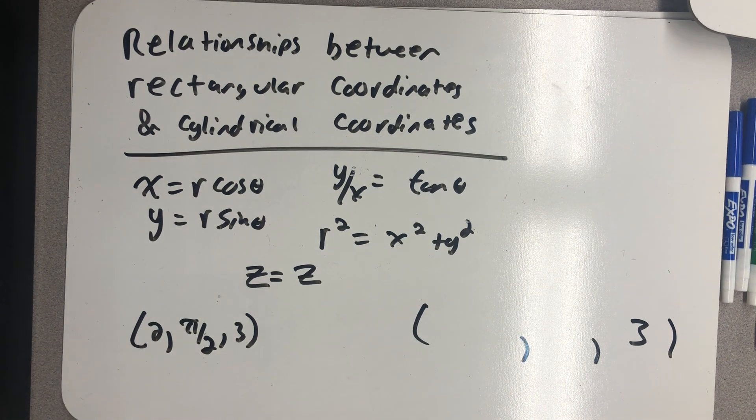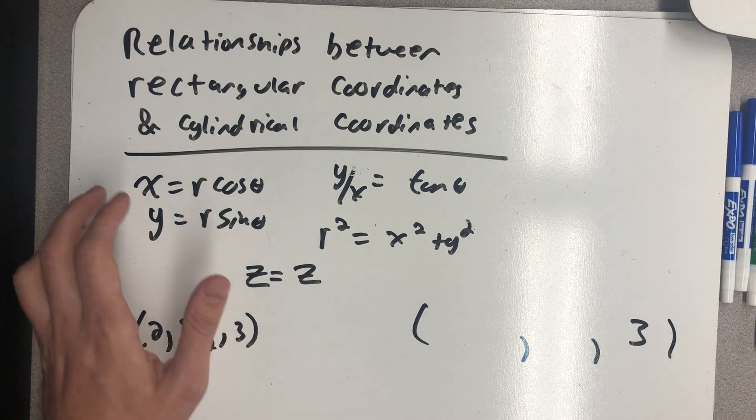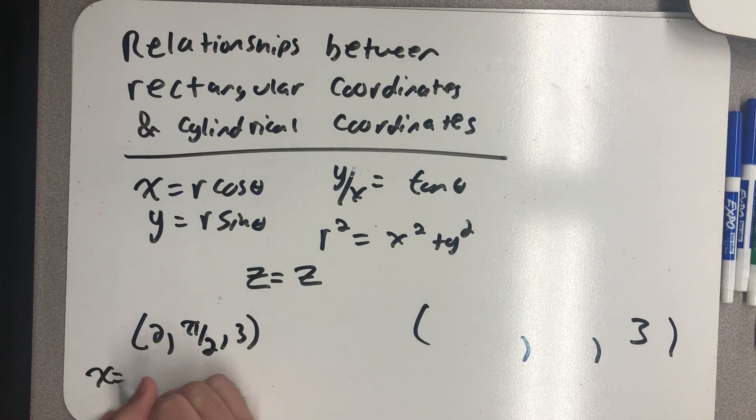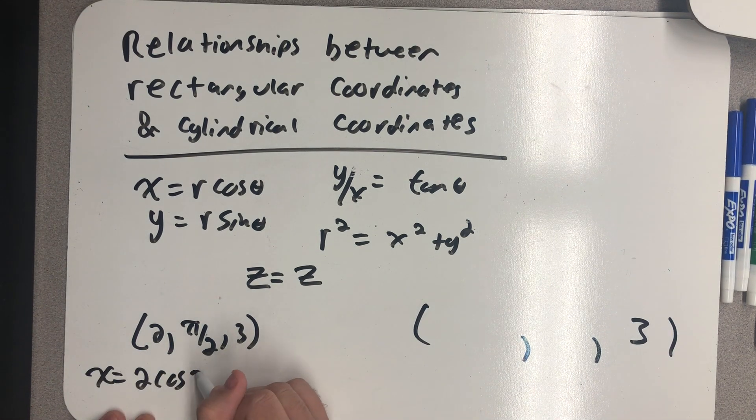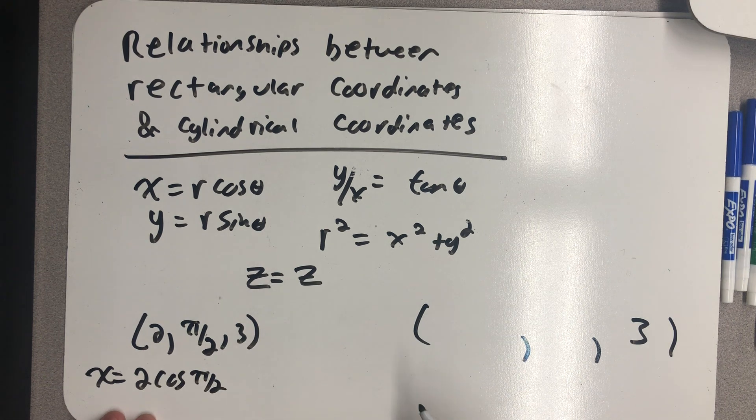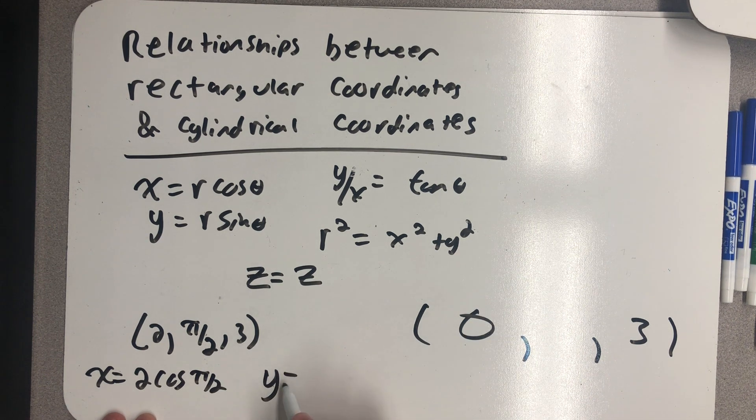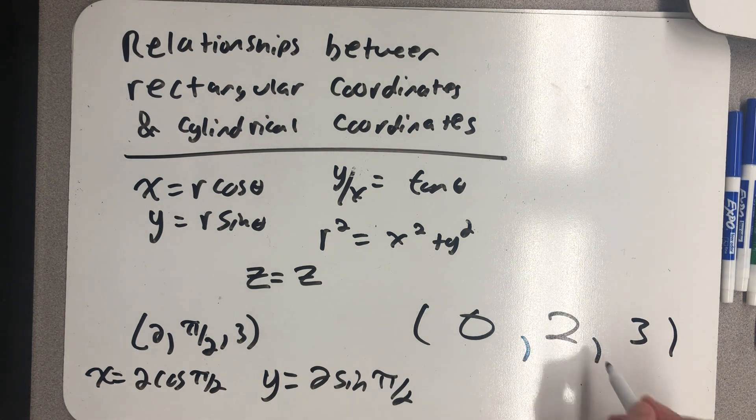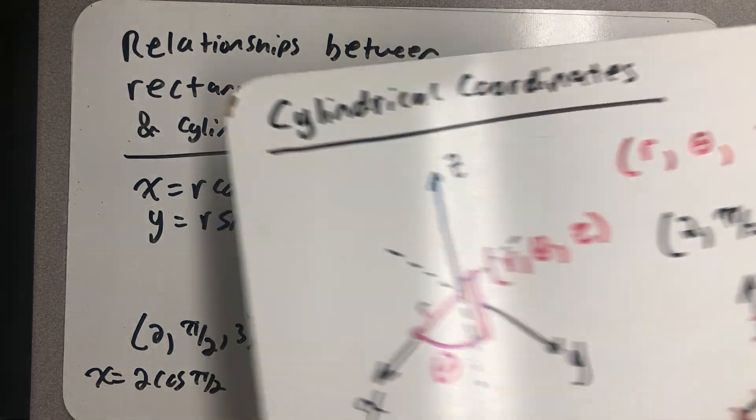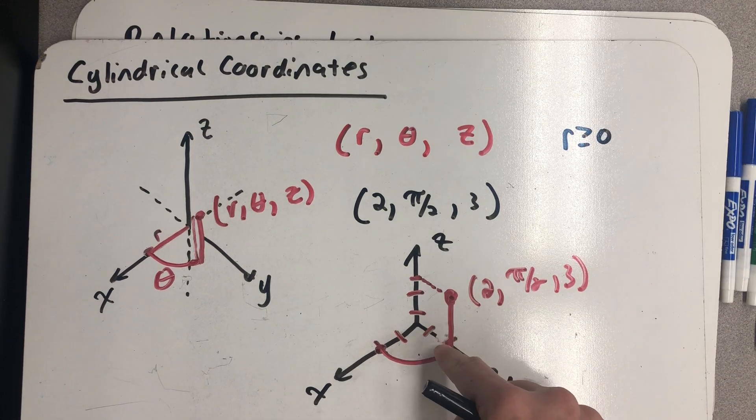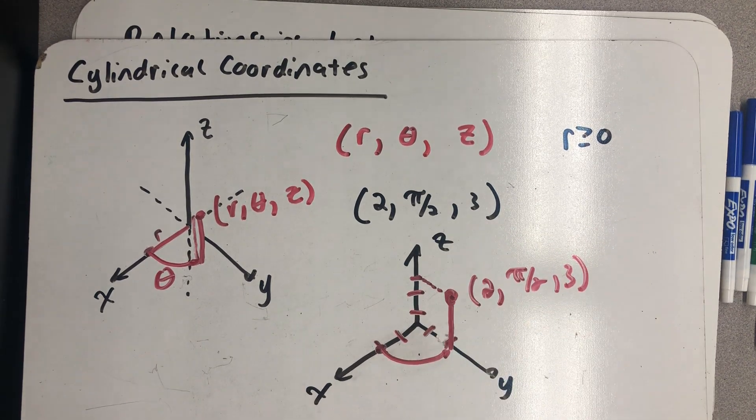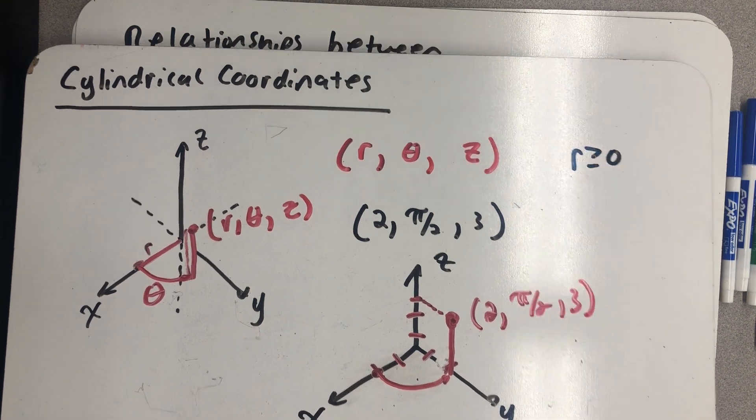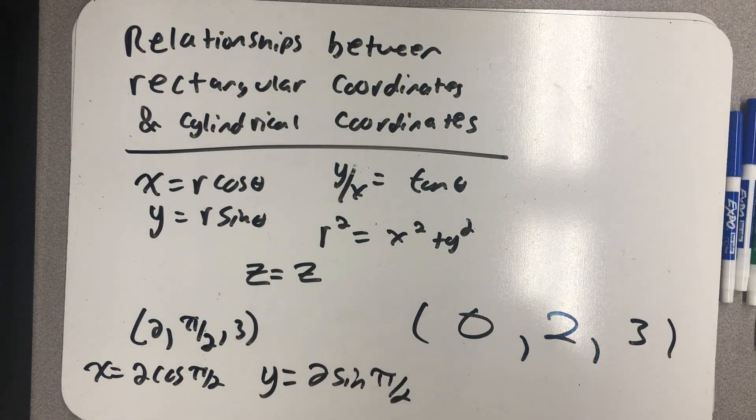I'm really just converting a rectangular point in the plane to a polar point in the plane now. So x is 2 cosine of pi halves. Well, the cosine of pi halves is 0. So the x coordinate is 0. y equals 2 sine of pi halves, which is 2, which is nice because that's the point we plotted. We're at 2 on the y-axis and 3 on the z-axis. And because we had rotated the angle of pi halves, we were at x equal 0.